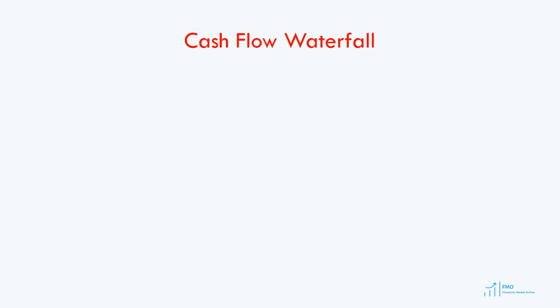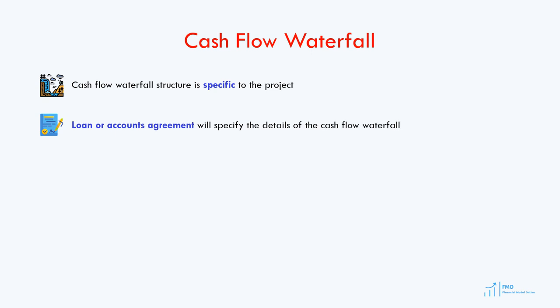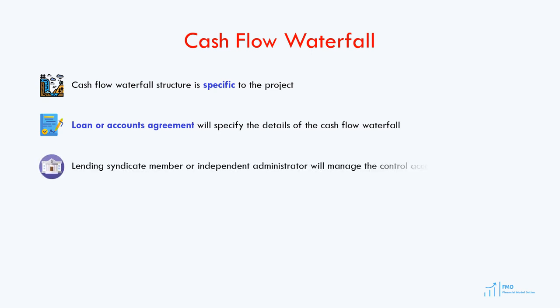The particular structure of the cash flow waterfall will be specific to each project and is subject to negotiations. The cash flow waterfall and required control accounts will be specified in the loan agreement or accounts agreements. The party which will manage the accounts will be either one of the lenders in a syndicate or an independent administrator.